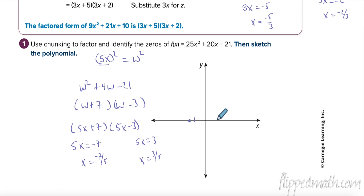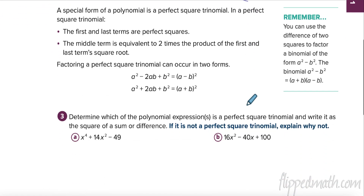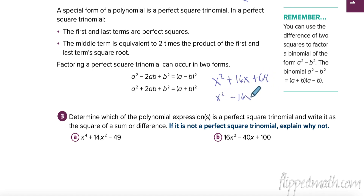We're on page 281 now - skipping the first section. Down here we're talking about perfect square trinomials. For example, x² + 16x + 64 or x² - 16x + 64. The last term has to be positive and a perfect square, the first term has to be positive and a perfect square, and the middle term must equal 2ab.